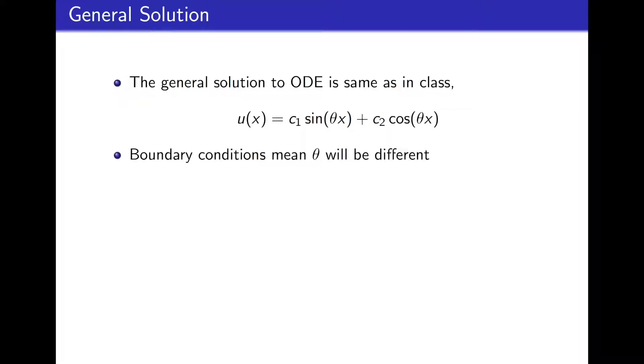So the different boundary conditions are going to give us, hopefully, different values for theta and different eigenvalues. Using the first boundary condition, u of 0 is equal to 0, we see that c2 is going to have to be 0, just as it was before.